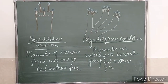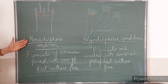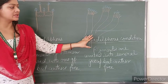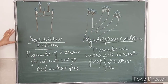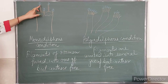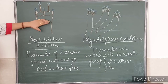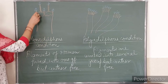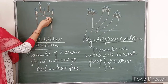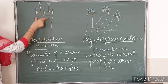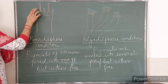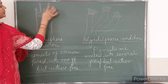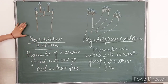Monadelphous condition and Polyadelphous condition. In Monadelphous condition, filaments of the stamens are fused into one group. All filaments are fused together to form a tube-like structure. This condition is known as Monadelphous condition.